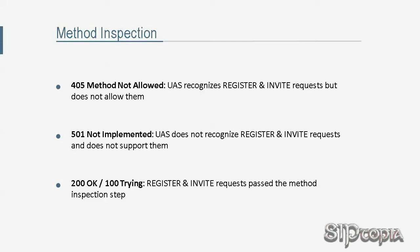Naturally, the UAC cannot use these methods again unless Tarzan wants to keep getting the same response. In this scenario, since we receive a 200 OK response for the REGISTER request and a 100 Trying response for the INVITE request, we know the requests passed method inspection — meaning the user-agent-server allows both REGISTER and INVITE. Keep in mind that SIP proxies will proxy the request regardless of the method used.